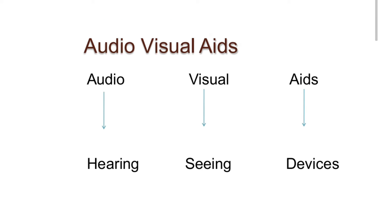Under Audio-Visual Aids, you have separately Audio Aids, only Visual Aids, or combined both Audio-Visual Aids. Audio means hearing, Visual means seeing, and Aids are the devices you are going to use. For example, Radio is an Audio Aid; TV is both an Audio and Visual Aid. There are so many types of Audio-Visual Aids which we will see in the forthcoming slides.